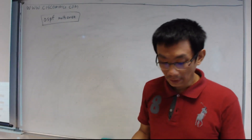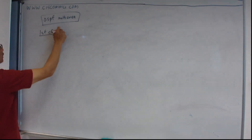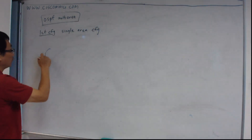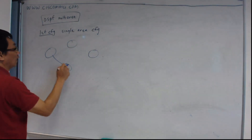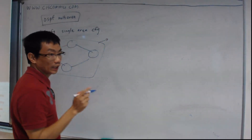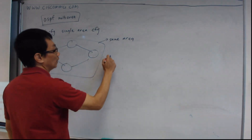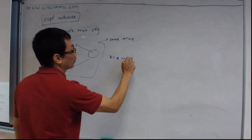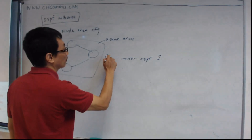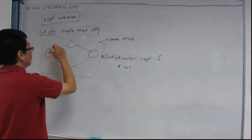The first thing is that when you configure a router, the first configuration will be a single area, which means that all the routers are in the same area. You must configure them into the same area. For example, on router one you put 'router OSPF 1', and after that you put a network command — let's say here is 200.